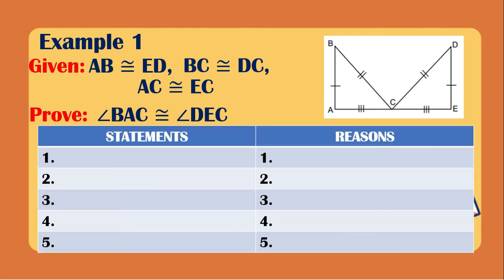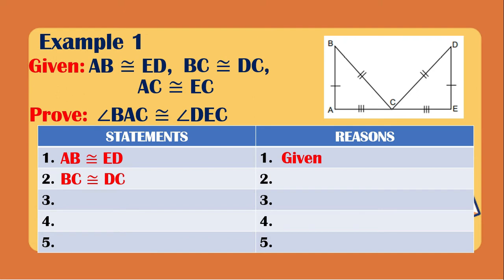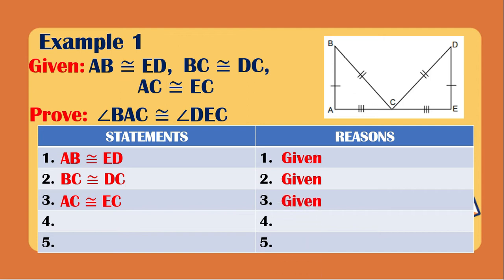We will have the two-column proof and supply them one by one. Our first statement will be AB is congruent to ED, and the reason is given. The second statement will be BC is congruent to DC, and the reason is also given. For the third statement, AC is congruent to EC, and the reason is also given. As you can see in our illustration, they are already marked.